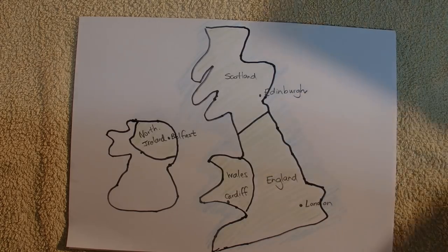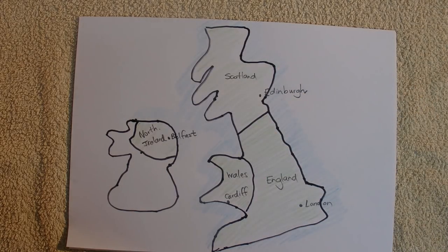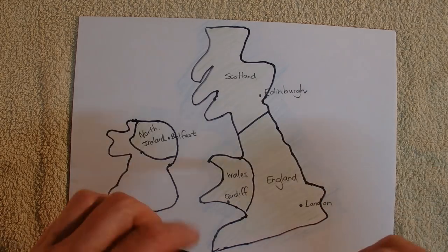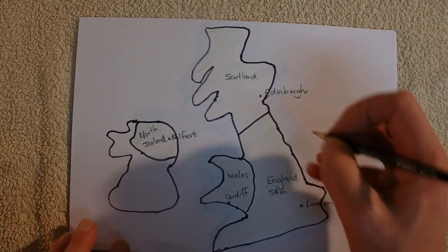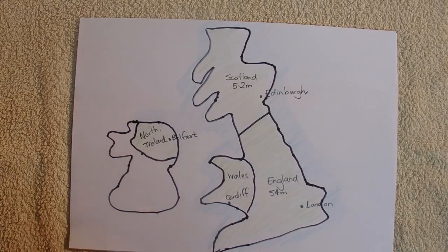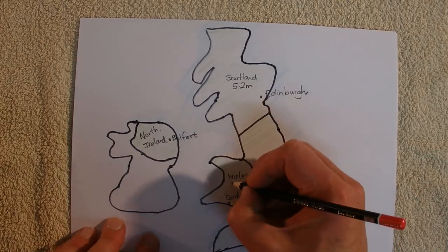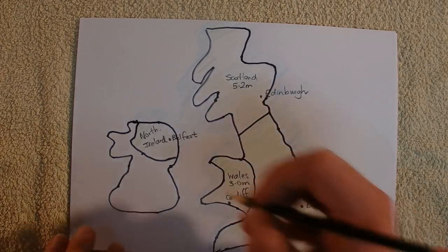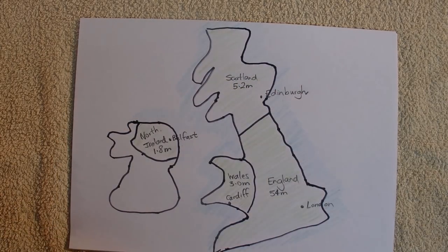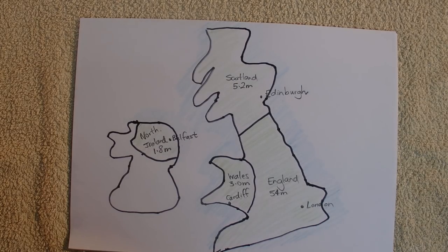The national anthem is 'God Save the Queen' for the United Kingdom. England has a population of around 54 million. Scotland has a population of 5.2 million. Wales has a population of 3 million, and Northern Ireland has a population of around about 1.8 million. And if you add all those up, I think that gives you around about 64 million people — though those population stats might have been from a couple of years ago, so it may have increased since then.